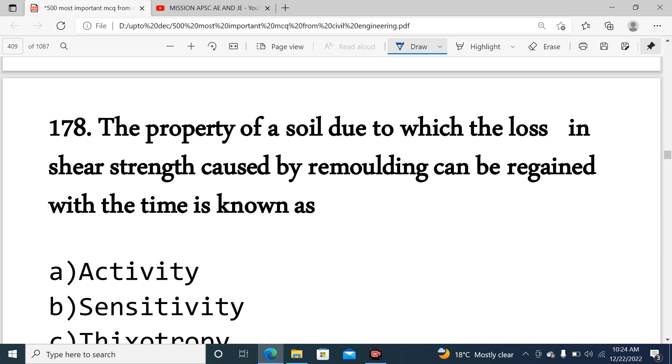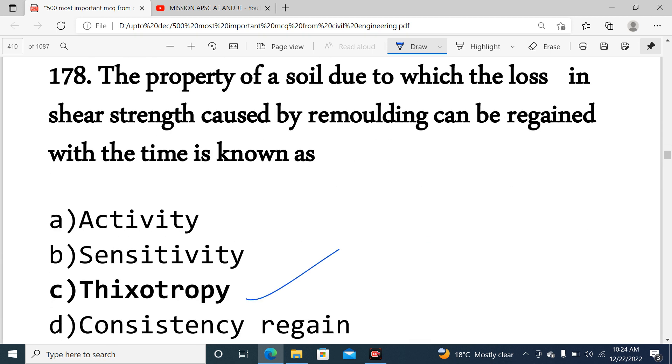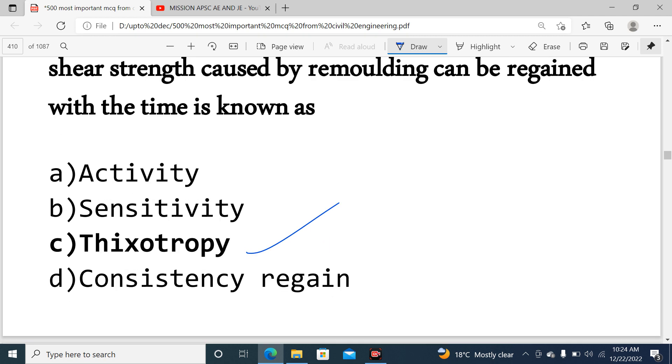Question 178: The property of soil where it loses strength due to remolding but can regain it with time is known as thixotropy. This is the process of regaining strength.